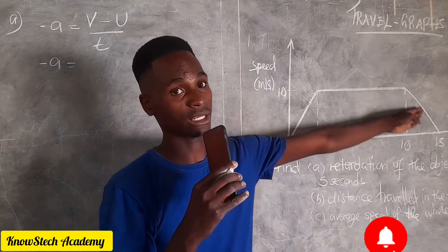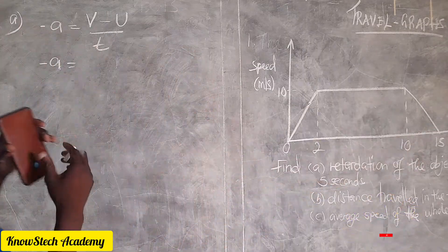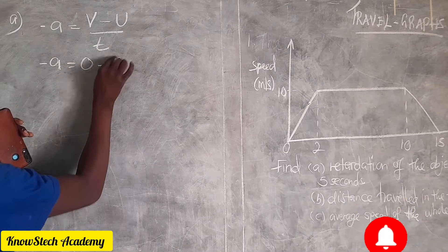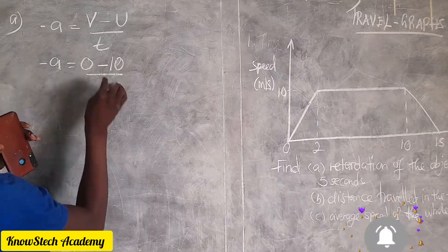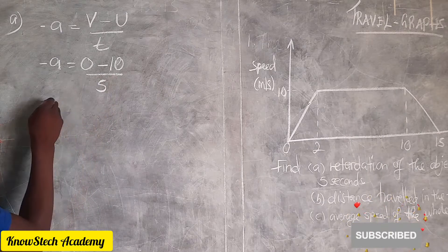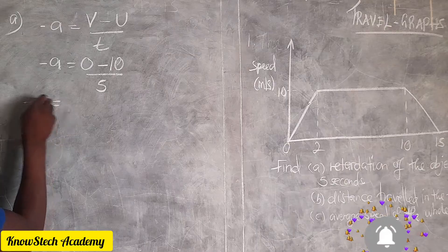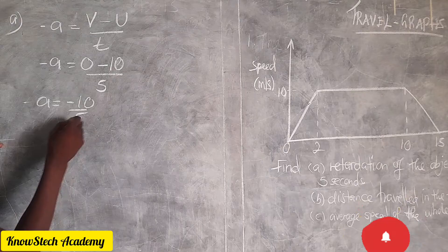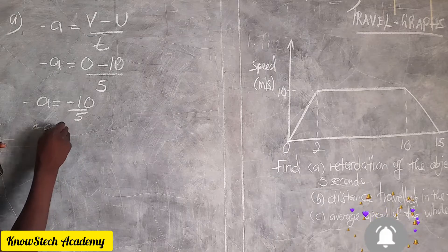So final velocity is zero, initial velocity was 10 over time taken which is five seconds. Negative acceleration is equal to zero minus 10 is negative 10, negative 10 divided by five.